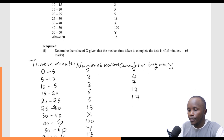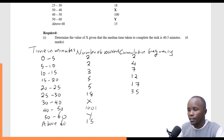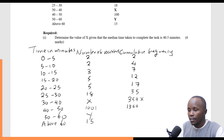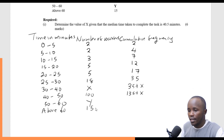Continuing: 17 plus 18 gives you 35. The next cumulative frequency should be 35 plus X. Then 35 plus X plus 100 gives me 135 plus X. Then 135 plus X plus Y gives me 135 plus X plus Y. And finally, 135 plus X plus Y plus 15 gives me 150 plus X plus Y.